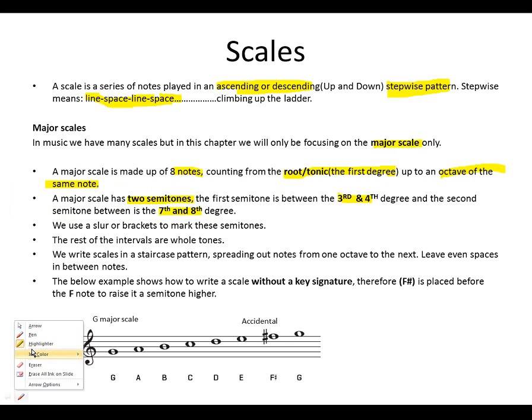Let's mark them again to help us remember. 1st degree of the G major scale, 2nd degree of the G major scale, 3rd degree of the G major scale, and the 4th degree. This is where we find our first semitone, between the 3rd and 4th degree.